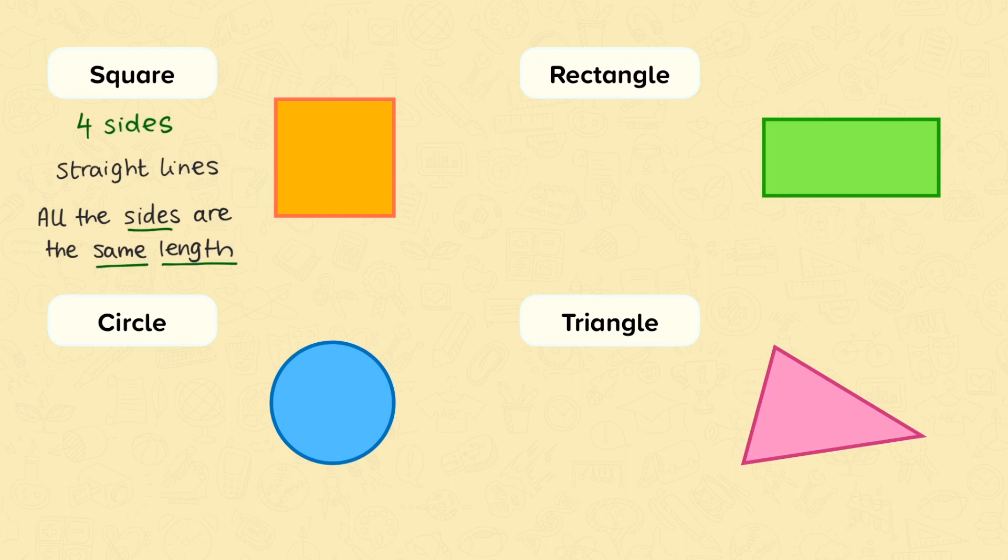In the next shape, the rectangle, we also have four sides. And again, all of those sides are straight lines. But this time they're not all the same length. You can see that this side is shorter than this side.